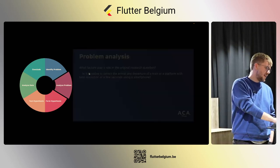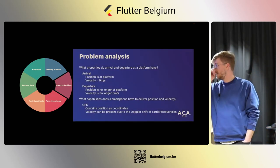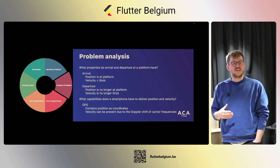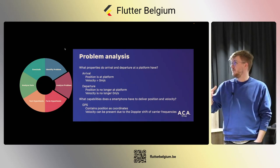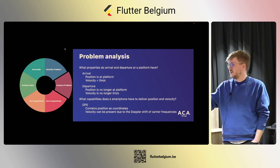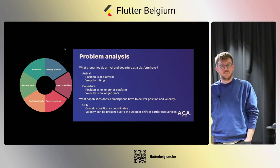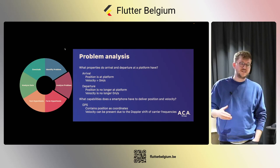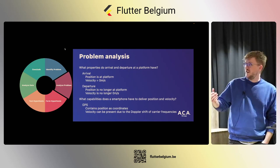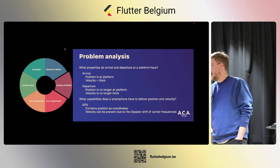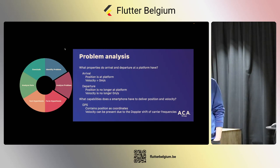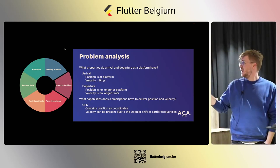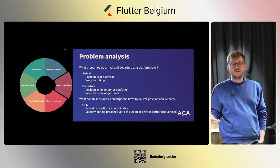We're looking at arrival and departure at a platform — what does that actually mean? Arrival means your position is at the platform: you have a GPS coordinate at the platform and velocity becomes zero — the train comes to a standstill. Departure means you're no longer at the platform and your velocity is no longer zero because the train is leaving. Our smartphone has GPS, which contains coordinates and velocity, so we might be able to do something with that.